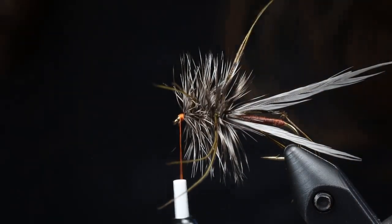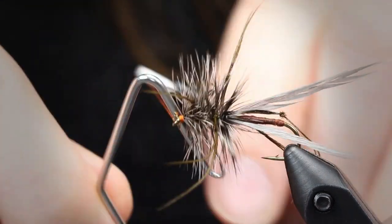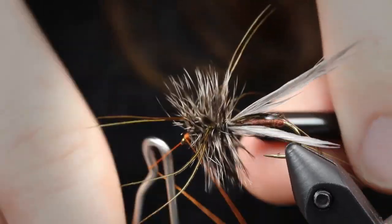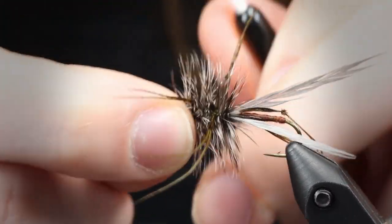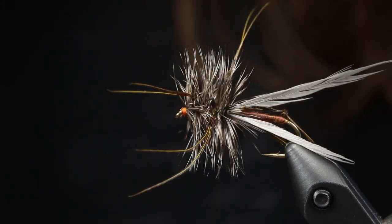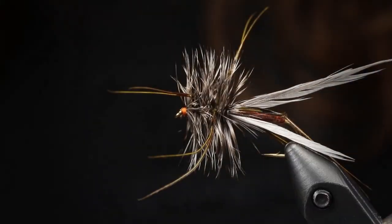I'm going to cut off my piece of excess hackle. Hold back all this material, clean up that head, and I'm going to give it a whip finish, and we should be done. And there you have it, the rusty crane fly.